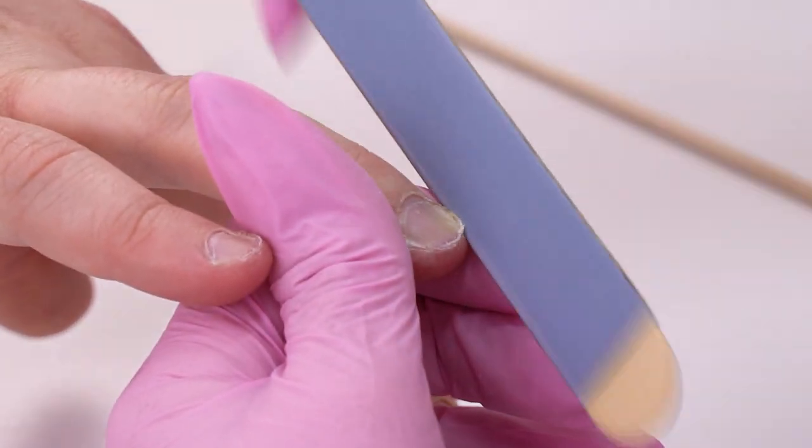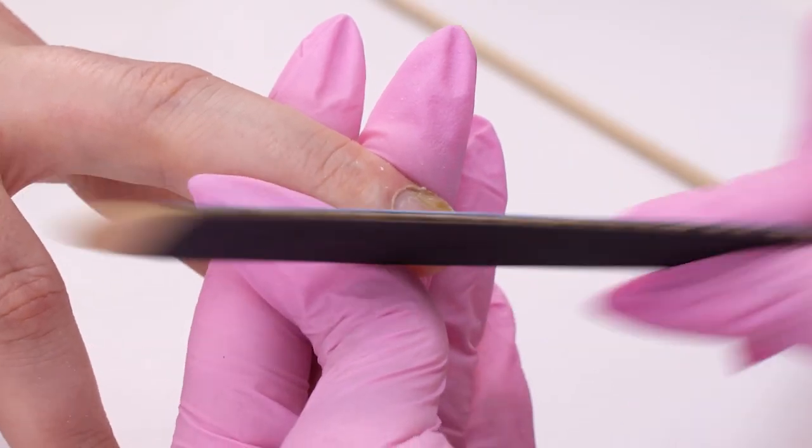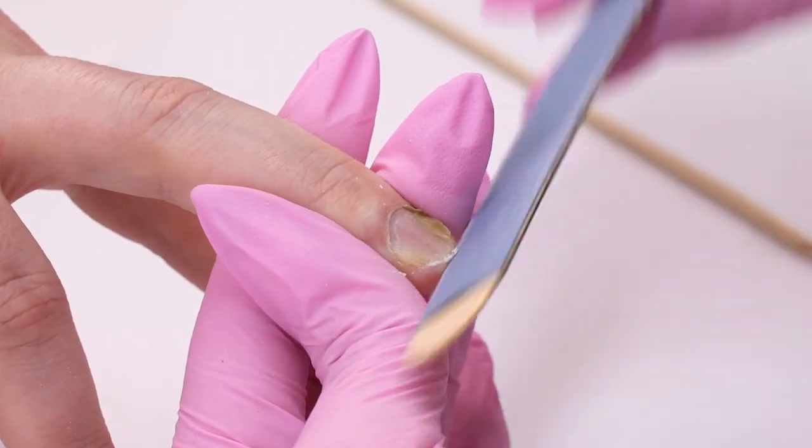This particular nail condition is called tracheonicia. When the nails are thin, spoon-like, without a lunula.